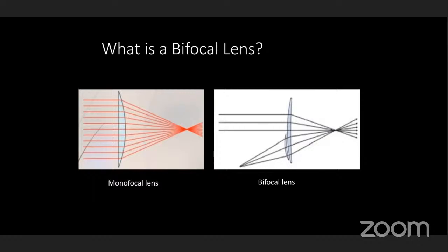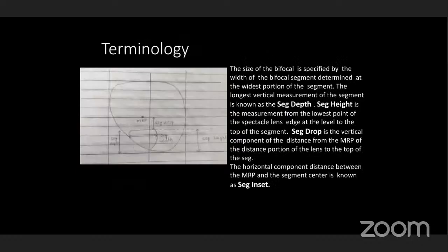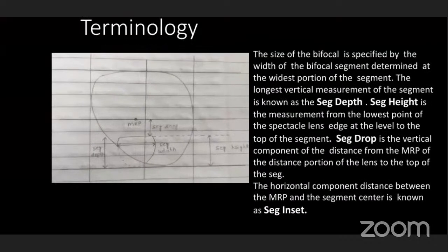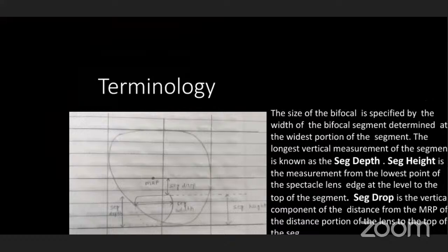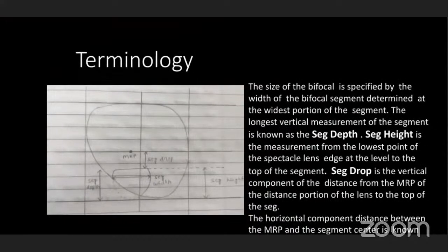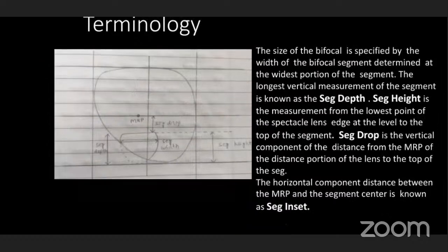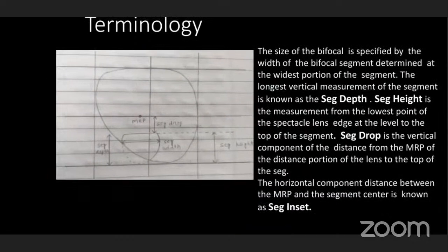Here is an example: a single complete lens will have two different segments, each with two different focal lengths. Now we'll see the terminology. The size of the bifocal is specified by the width of the bifocal segment determined at the widest point. The longest vertical measurement of the segment is known as seg depth. Seg height is the measurement from the lower edge to the top of the segment. Seg drop is the vertical component of the distance from the MRP — mean reference point — of the distance portion to the top of the seg. The horizontal component distance between the MRP and the segment center is known as seg in-center.